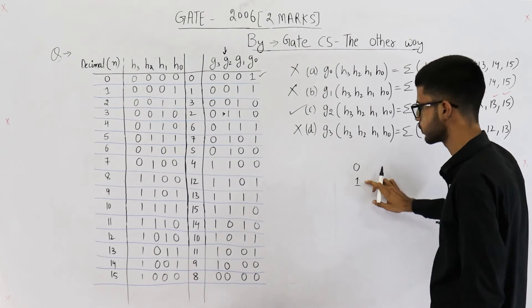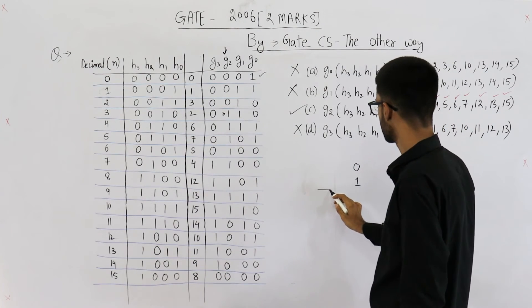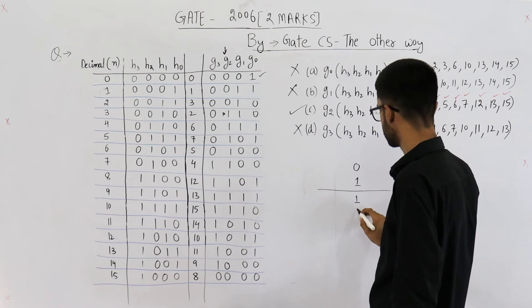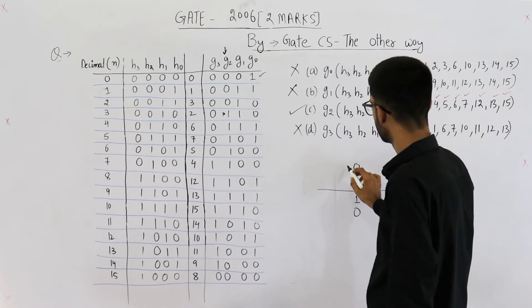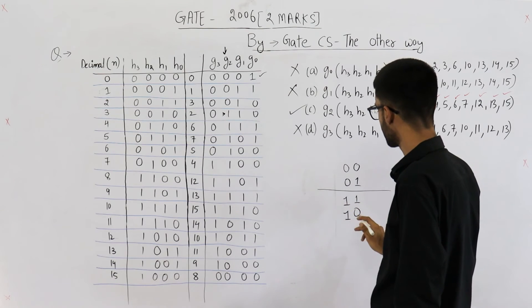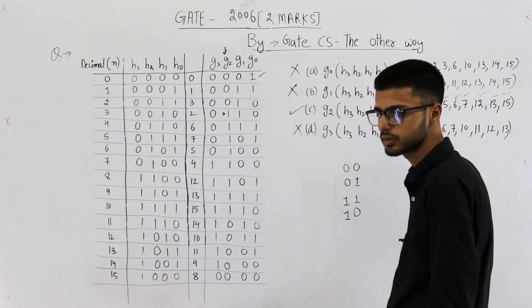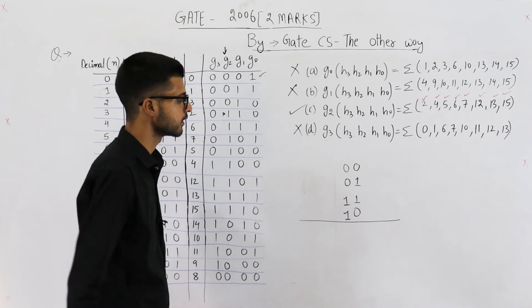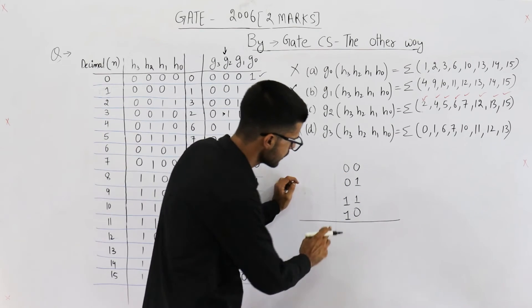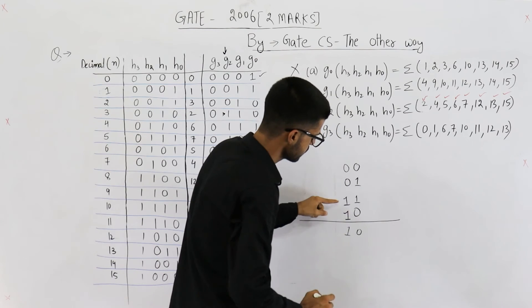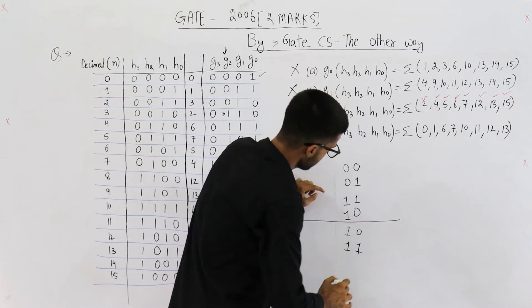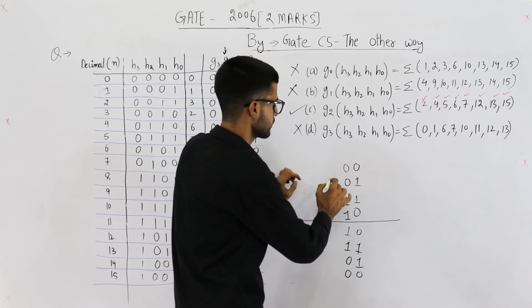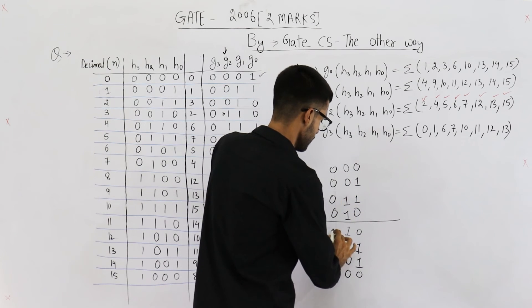See, if you want to write gray codes of binary numbers, you will follow this method. The gray code of 0 and 1 is as it is. For writing the next. Let us start again. The gray code of 0 and 1 are 0 and 1. For writing the next gray code, what you will do? You will put a mirror here. And write them as it is. So this is 1 and this one is 0. Next thing that you will do, put a 0 here and put a 1 here.